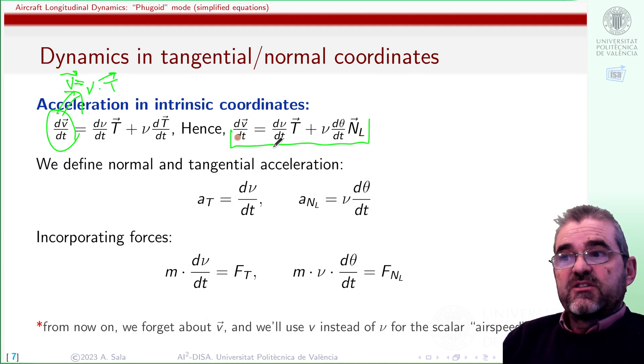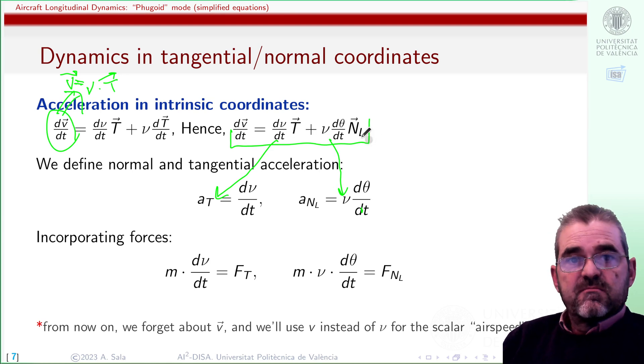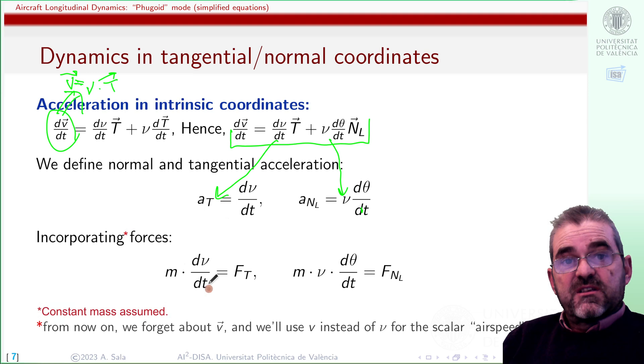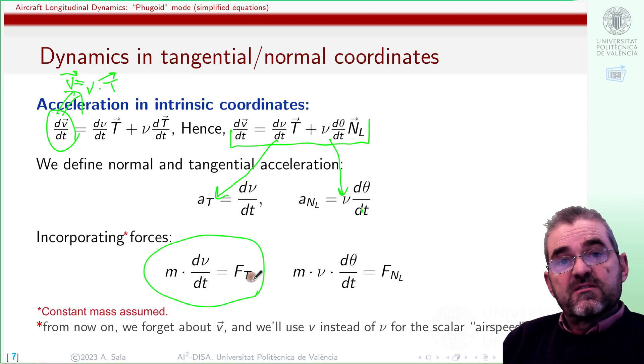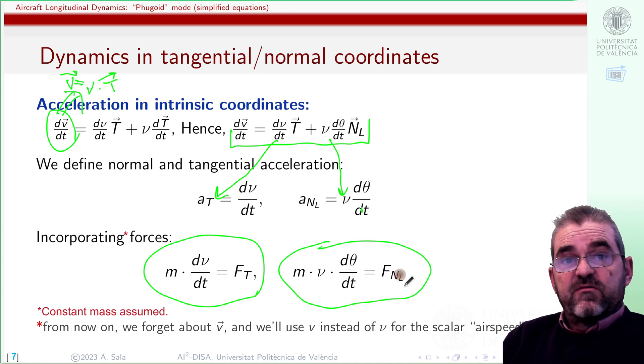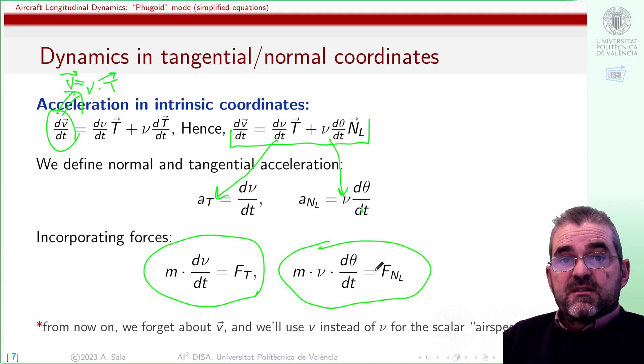So applying the product rule for derivatives, we can prove this. So this is the acceleration. This will be the tangential acceleration and this will be the normal acceleration. Normal left. This normal acceleration has sign, can be positive or negative. Positive will mean counterclockwise rotation. Negative will be clockwise rotation of the trajectory. So mass times tangential acceleration will be equal to the tangential net force. And mass times normal acceleration will be equal to the normal net force.